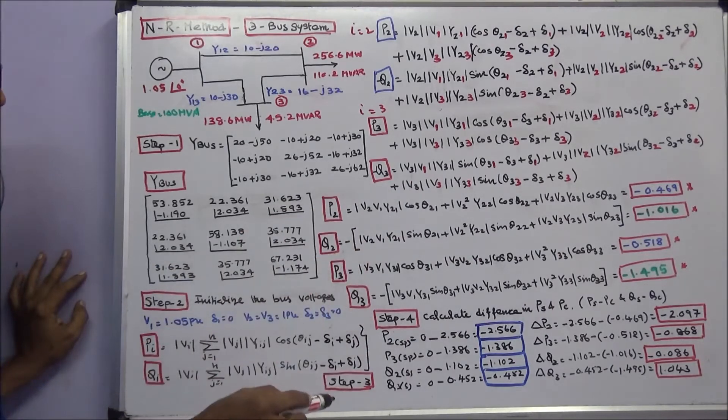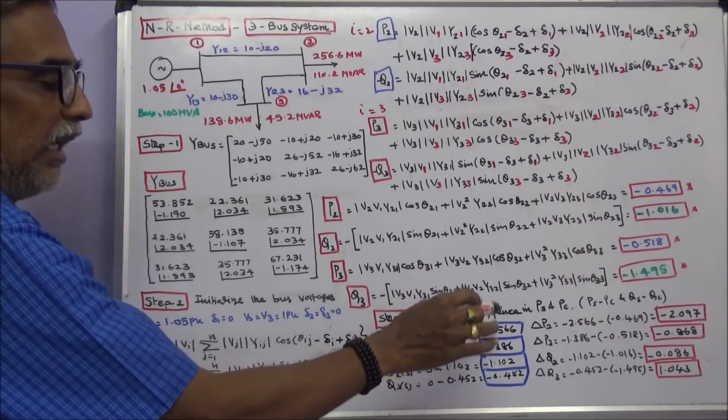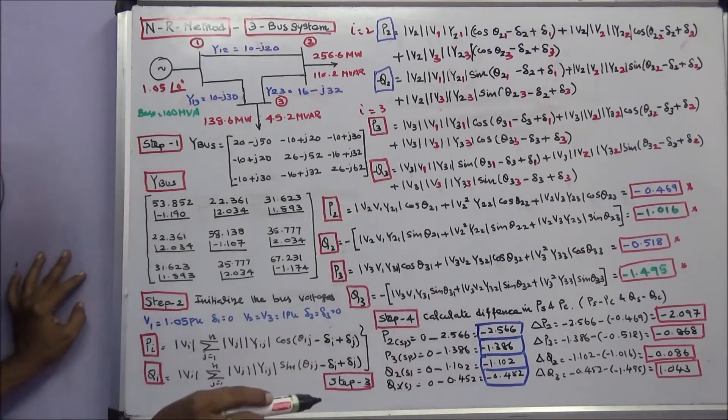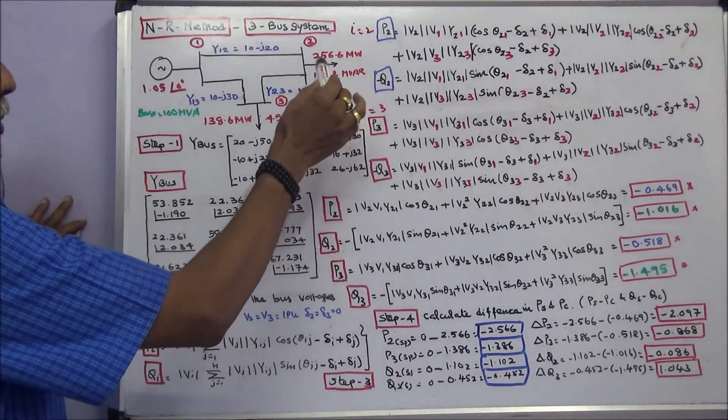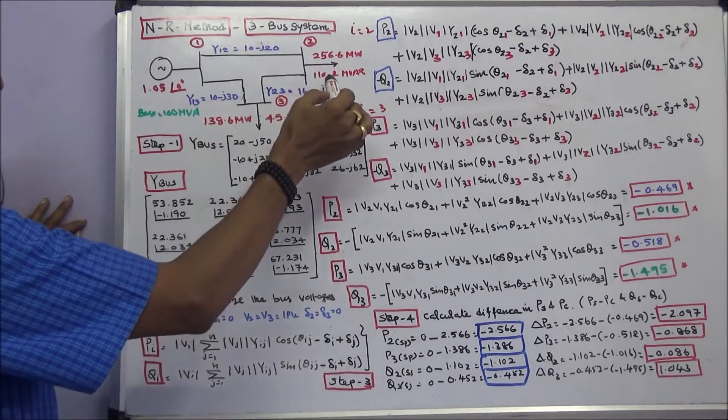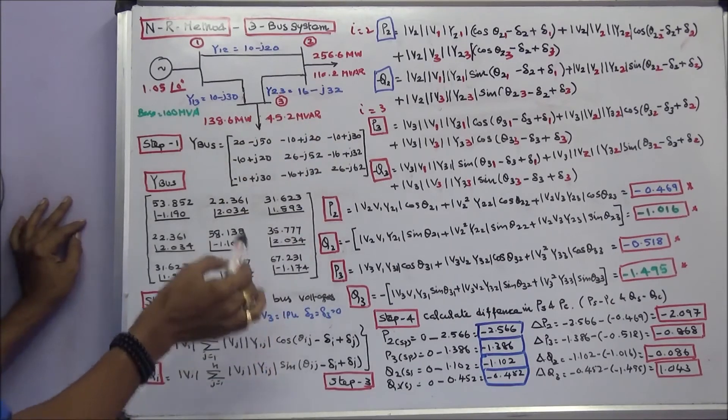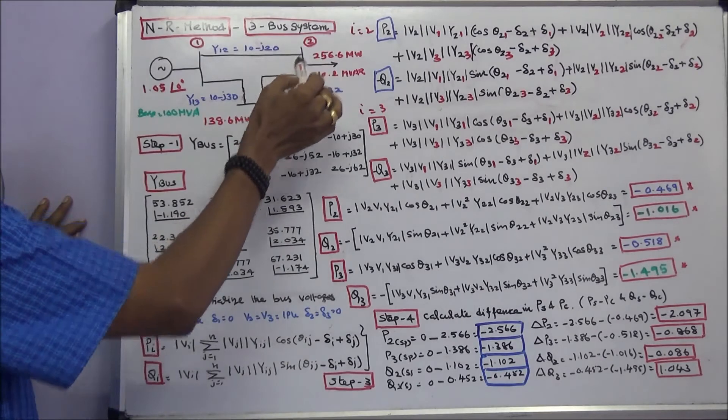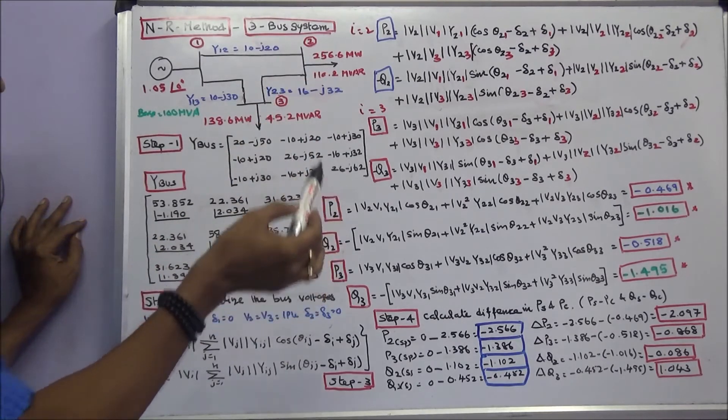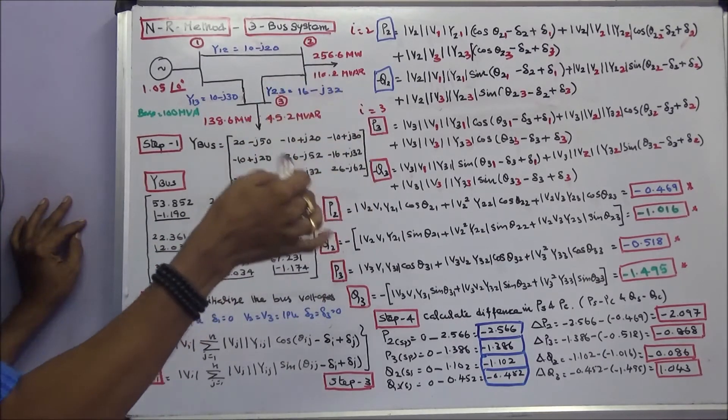The fourth step is we have to find the difference, that is del P2, del P3, del Q2, del Q3. First we have to calculate P2 specified, P3 specified, Q2 specified and Q3 specified. Base MVA is equal to 100. The bus 2 and bus 3 are load buses, therefore the real and reactive power generation is 0.